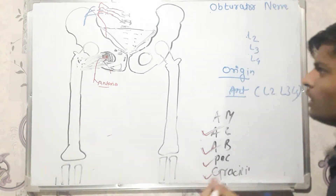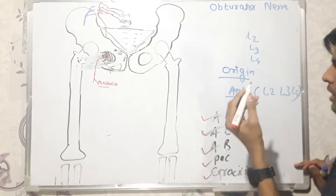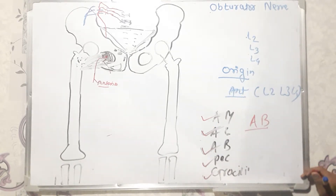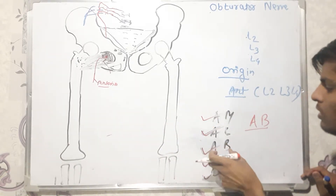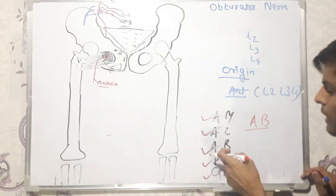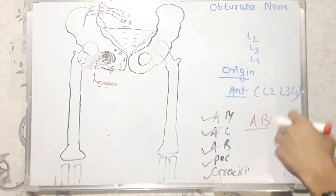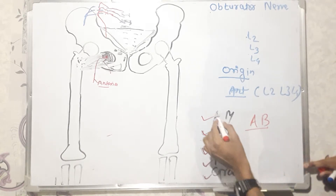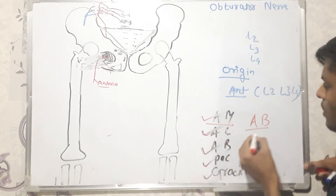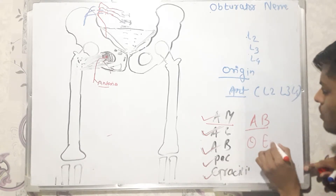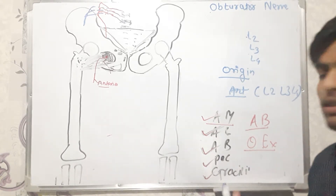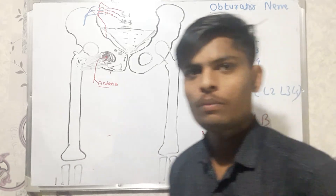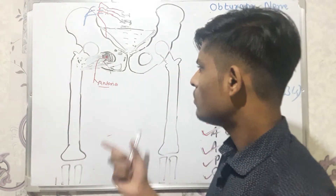The posterior division supplies adductor magnus. It may also supply adductor brevis if it was not already supplied by the anterior division — adductor brevis can be supplied by either the anterior or posterior division, not both. Additionally, the posterior division supplies the obturator externus muscle, which is a muscle of the gluteal region, not the adductor compartment.